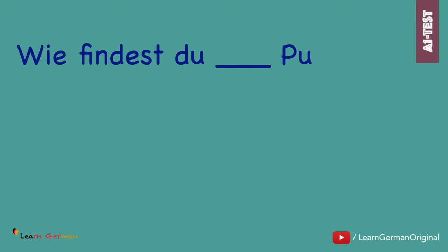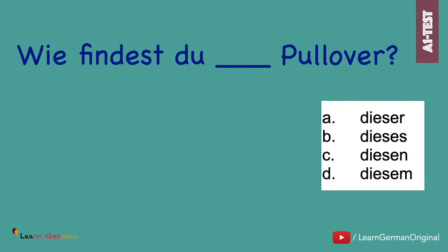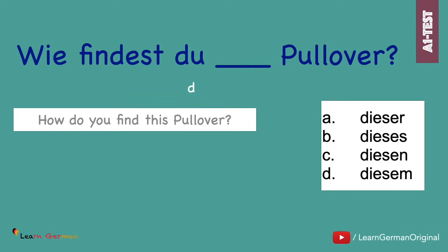Nummer 19. Wie findest du... Pullover? And the answer is: Wie findest du diesen Pullover? Der Pullover in Akkusativ is den Pullover, hence diesen Pullover.